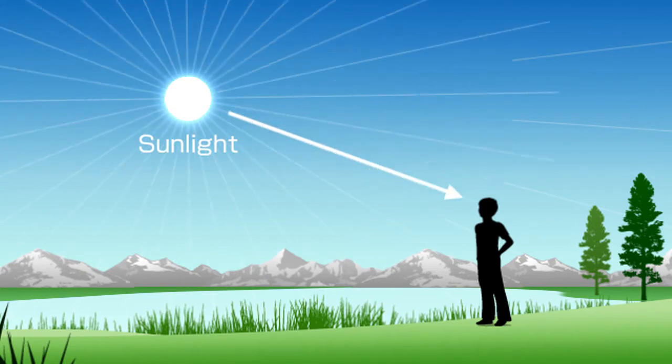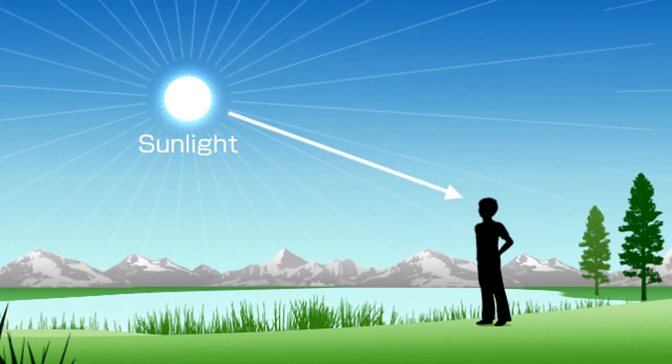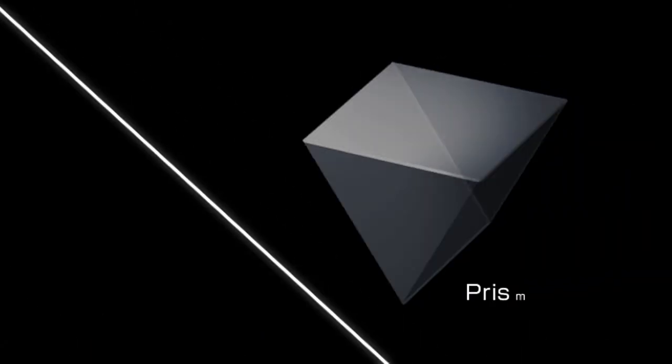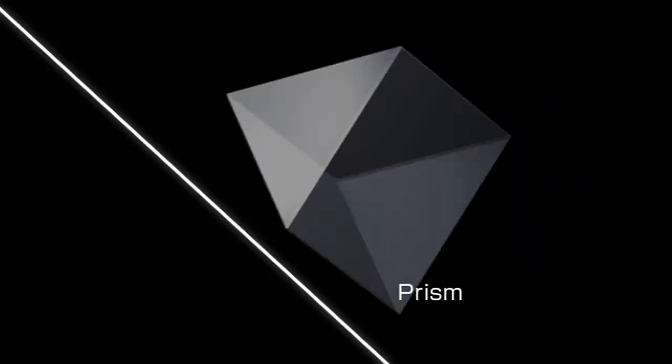Normally, sunlight appears white to our eyes. When sunlight passes through a prism, it creates many different colors.